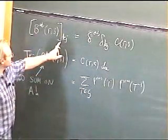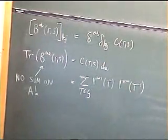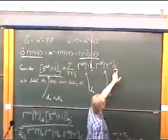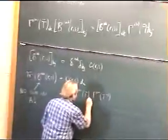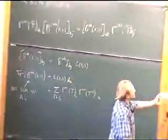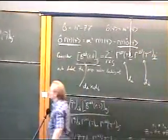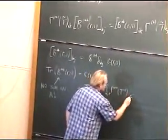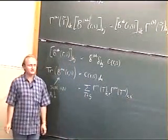When I take the trace I'm setting K equal to J and summing. So if I take a look at this, there's the I, J index. I must set this first index equal to that index. So if this is an I, that must be an I. And R, S are now the inside indices.